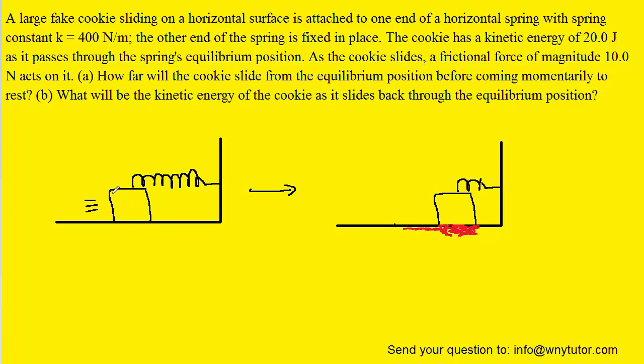So initially we have the cookie sliding to the right, and because it's moving it would initially have some kinetic energy. When the spring brings the cookie to rest, we have a final potential energy. And in addition, because of friction, we're going to have some thermal energy present as well. And we can call that E_TH.